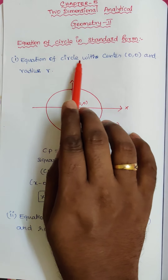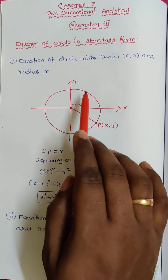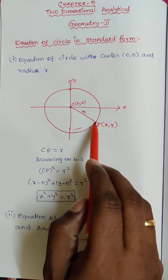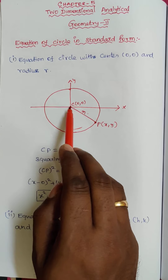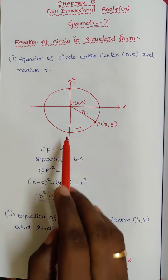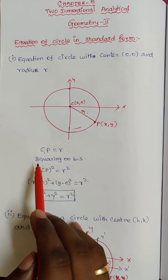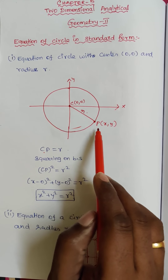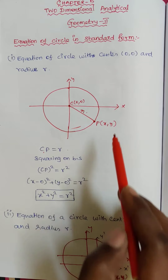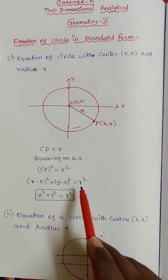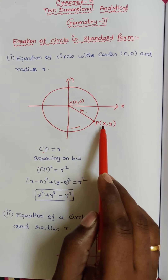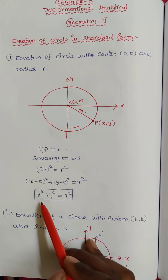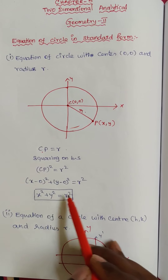The first one is the equation of a circle with center (0, 0) and radius r. I'll draw the diagram — the circle has center (0, 0) and a point P(x, y) on the circle. The distance from the center to the point is radius r, so CP = r. Squaring both sides, using the distance formula: x minus 0 squared plus y minus 0 squared equals r squared, which gives x squared plus y squared equals r squared.